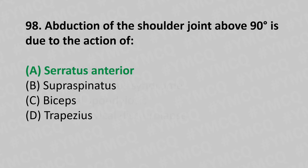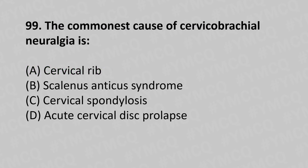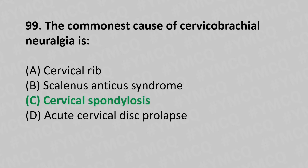Moving to our 99th question. The commonest cause of cervicobrachial neuralgia is: option A cervical rib, option B scalenus anticus syndrome, option C cervical spondylosis, option D acute cervical disc prolapse. The answer is option C, cervical spondylosis.